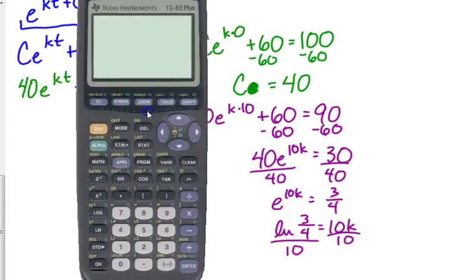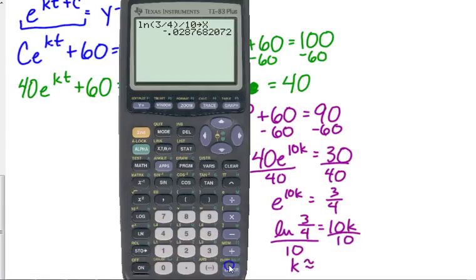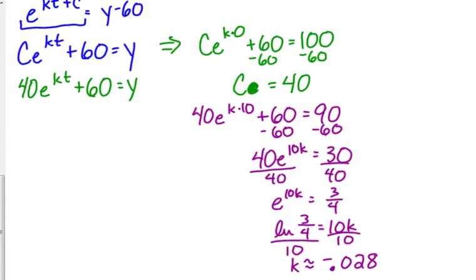I'm going to type it in and store it as X. So it's approximately negative 0.028. It is cooling. This is decay. So it makes sense that K is negative.